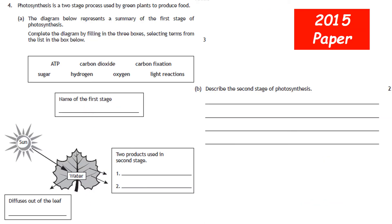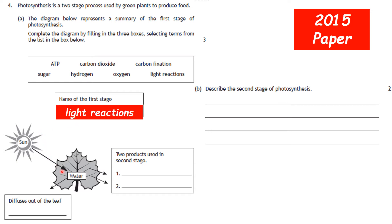Here's a past paper question: photosynthesis is a two-stage process used by green plants to produce food. Complete the diagram of Stage 1 by filling in three boxes from the list. The name of the first stage is the light reactions. The two products used in Stage 2 are ATP and hydrogen. The substance diffusing out of the leaf is oxygen.